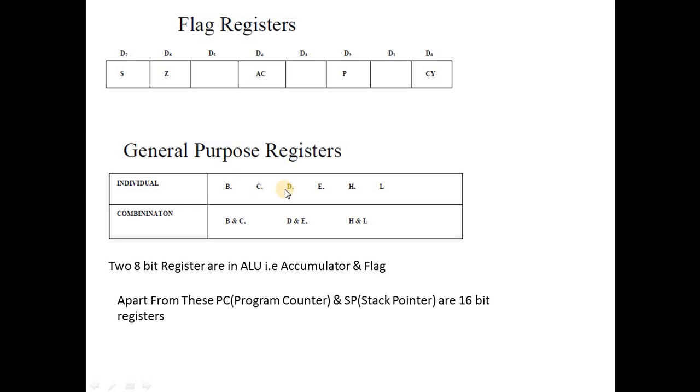Now there are some registers in the architecture: B, C, D, E, H, L. These are 8-bit registers, but we can use them in combinations. These register pairs are BC, DE, and HL.